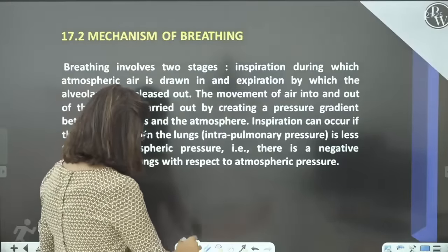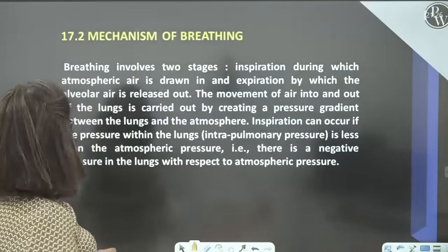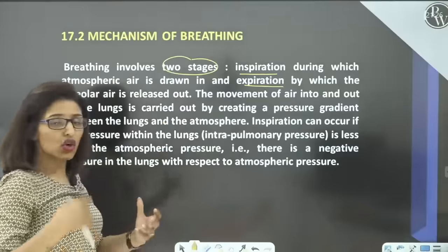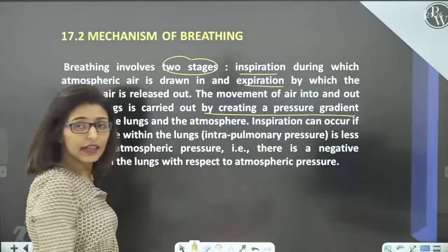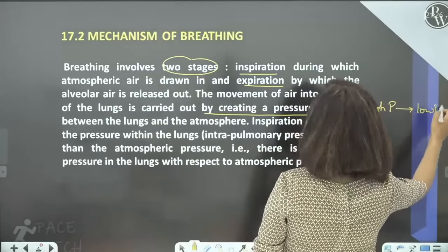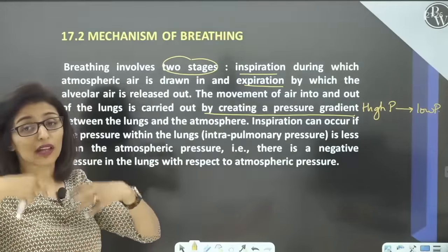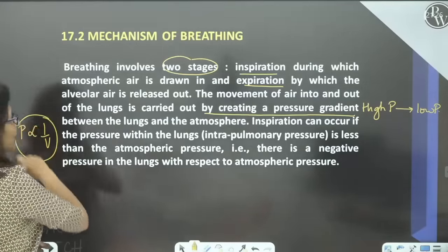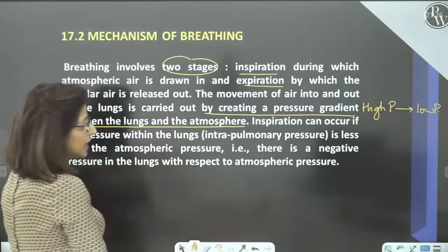Let's read NCERT together. Yesterday we covered the mechanism of breathing — two stages: inspiration, in which atmospheric air moves in, and expiration, in which air is drawn out. Movement of air into and out of the lungs occurs by creating a pressure gradient. Air moves from high pressure to low pressure. To inhale, we need the pressure inside the lungs to be lower, and to exhale, the pressure inside must be higher. Since we cannot change atmospheric pressure, we change volume — because pressure and volume are inversely related.